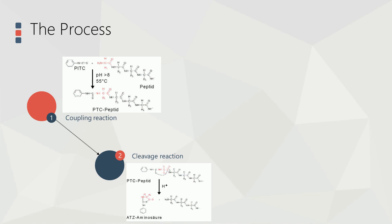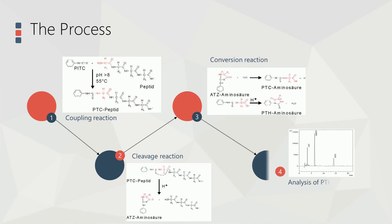Once formed, this thiazolinone derivative is more stable than the phenylthiocarbamyl derivative. The anilinothiazolinone amino acid is then removed by extraction with ethyl acetate and converted to a phenylthiohydantoin derivative. The phenylthiocarbamyl residue generated by each cycle of Edman degradation is typically identified by chromatography. By repeated degradations, the amino acid sequence of some residues in a protein can be determined.